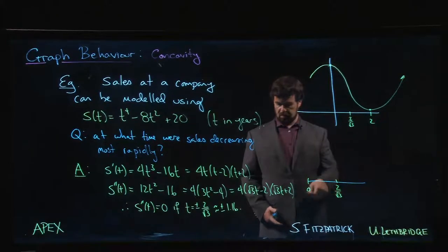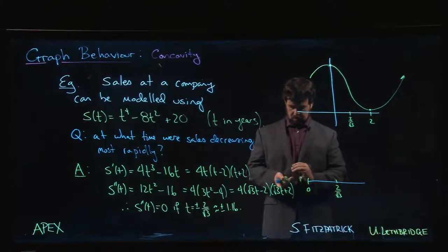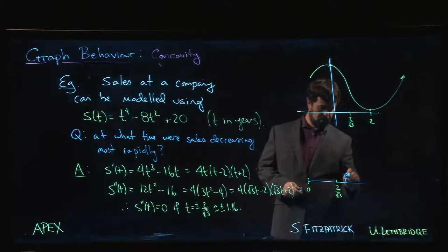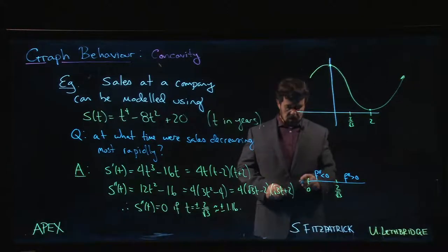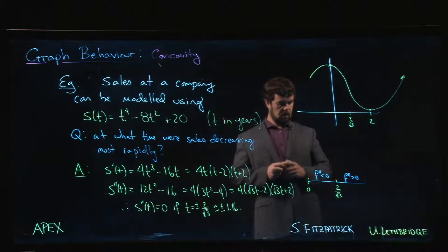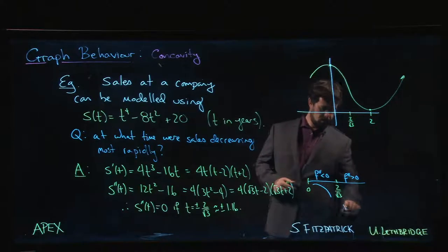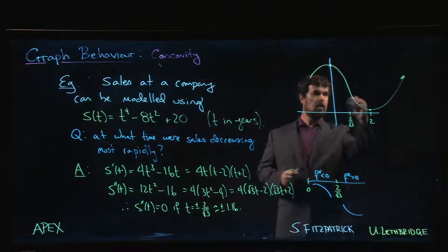We can work out that if we take a t value bigger than 2 over root 3, both factors here are going to be positive, so we know that f''(t) is positive here and it's going to be negative over here. That means concave down and then concave up, and at 2 over root 3 we have an inflection point.